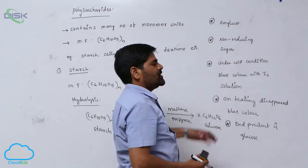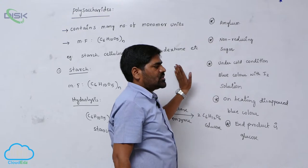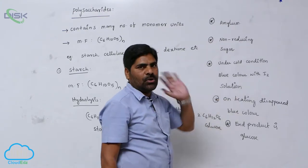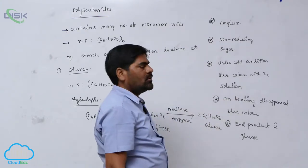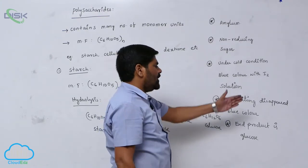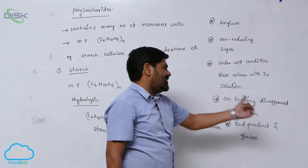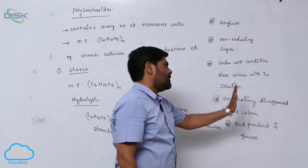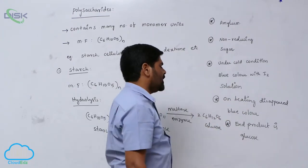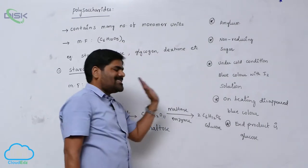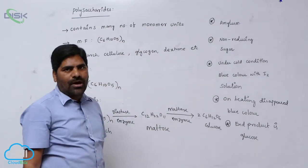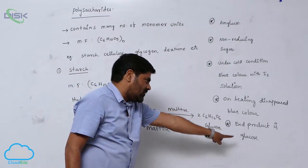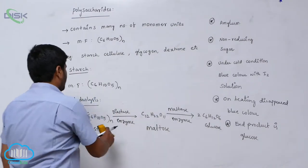Starch is a non-reducing sugar. Under cold conditions, starch reacts with iodine to form a blue color solution. On heating, the blue color disappears. The end product of hydrolysis of starch is always glucose.